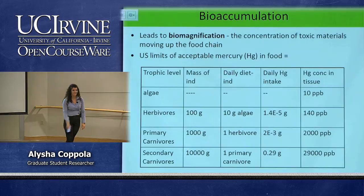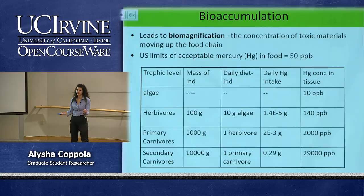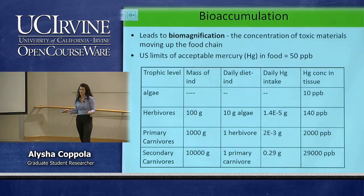The US limit is 50 parts per billion — so pretty surprising. That's why it's important to eat fish not very often, and they sometimes say pregnant women shouldn't have fish, because you don't want this accumulation of mercury as you move higher up the trophic levels.